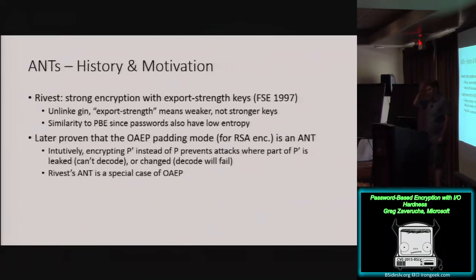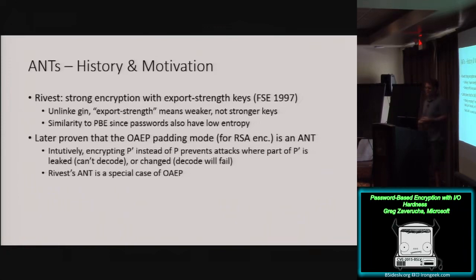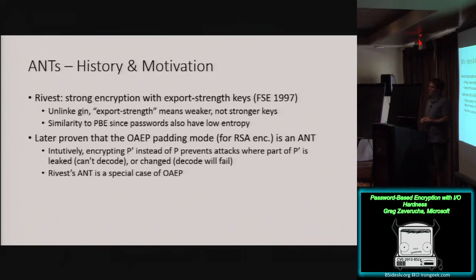Why would somebody invent such a thing? This is an old idea — there's a good crypto paper from 1997 by Rivest. His goal was to improve the strength of encryption using export keys, which is sort of similar to password-based encryption — it's something that you don't want to do, but maybe it's your best option or your only option. Export keys and passwords are both weak; they both have low entropy. Later it was shown that OAEP, which is a padding mode for RSA encryption, is an all-or-nothing transform, and Rivest's transform is a special case of OAEP.